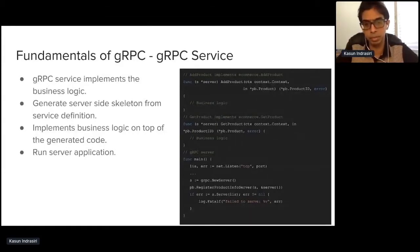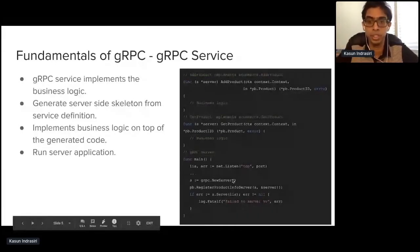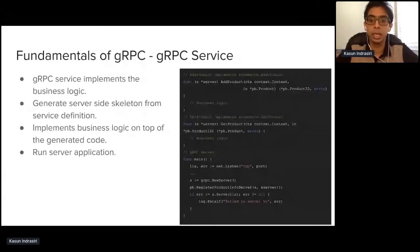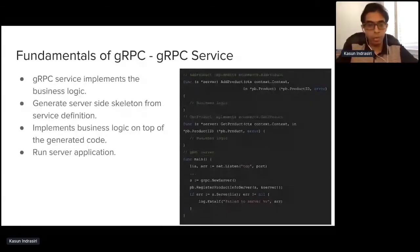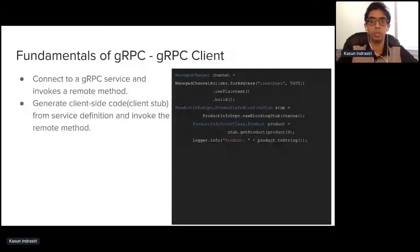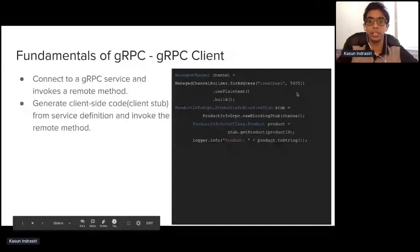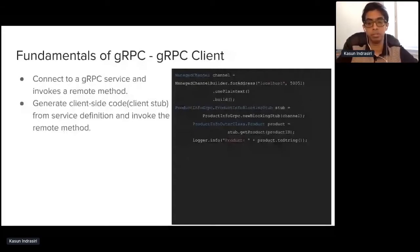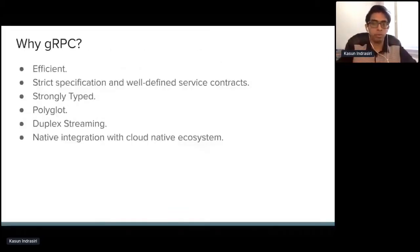Once you start a gRPC server and register your service, your gRPC service becomes available over the network so client applications can invoke it. On the client side, you use the same service definition and generate client-side code. From the client — here we have a Java example — you create a channel or connection with the server using localhost and the port of the gRPC server. Using the client-side stub, you can invoke any remote method the gRPC service offers as easily as making a local function call, with all other details transparent to the developer.